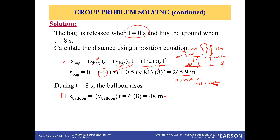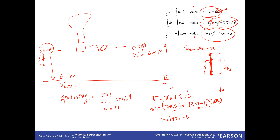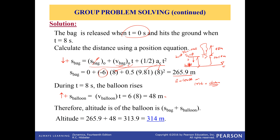What is important to remember is that all the expressions we have for constant acceleration are these three expressions, and those are the expressions you will use. Adding these two distances together gives 314 meters total altitude. This should help you complete all the problems for Thursday. Thank you.